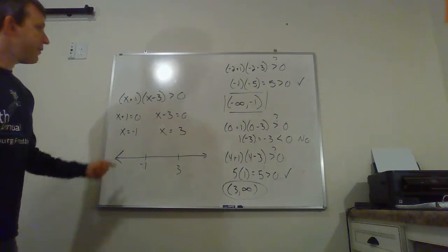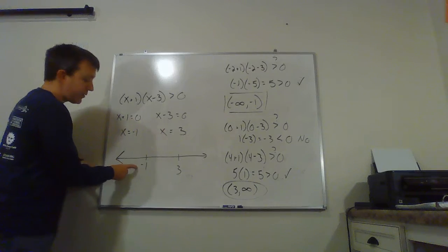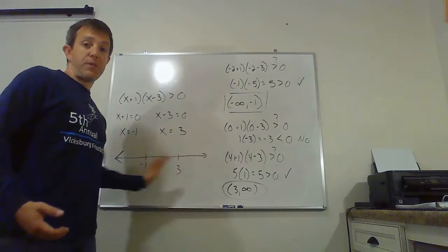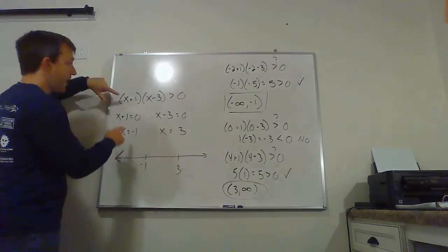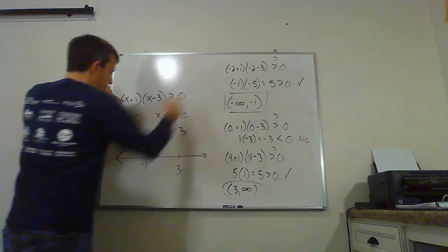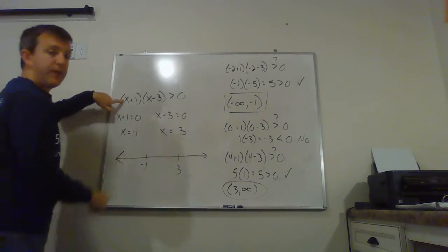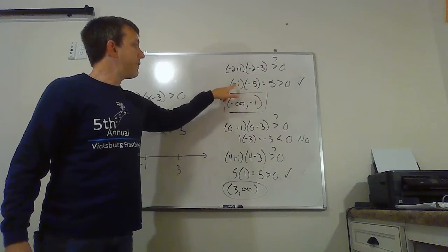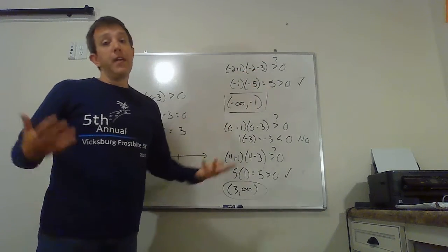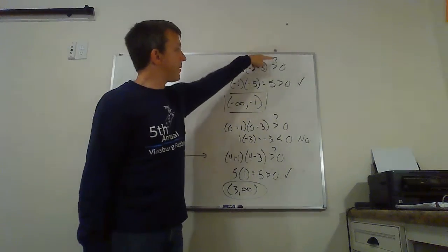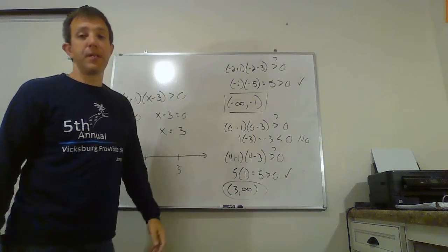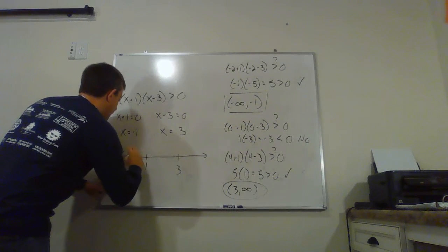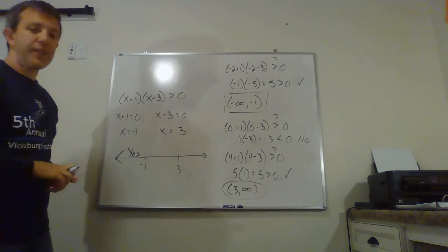What I'm looking for is just true statements. If I get a true statement, I want that particular interval. If I don't, I'm going to throw that one away. So my first interval out to the left of negative one - I took x and replaced it with negative two because negative two is out to the left of negative one. Negative two plus one makes negative one. Negative two minus three is negative five. If we multiply those, we get five. And five is certainly bigger than zero. So I asked myself, if I plug in negative two, is it bigger than zero? The answer is yes. So that particular interval worked.